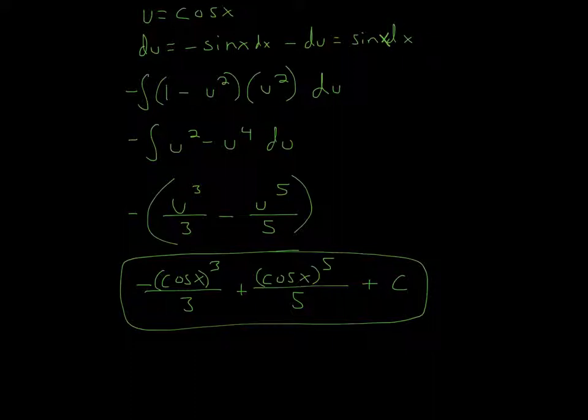So now what we do is we have negative out front, and then we just multiply across. So u squared times 1 is u squared, u squared times u squared is just negative u to the fourth du. And then now we do the integral.